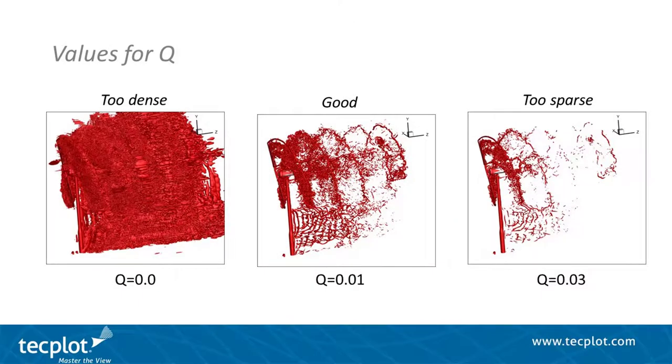Increasing Q reduces the complexity of the isosurface, but too high a value of Q makes an isosurface that is too sparse. It is important to find a value that results in an isosurface that is neither too dense nor too sparse.